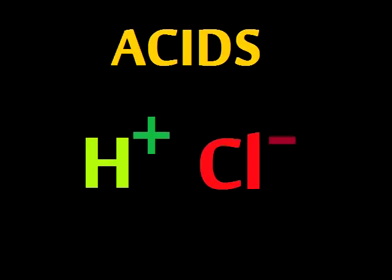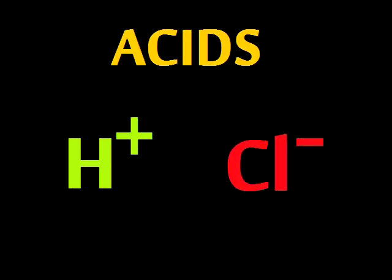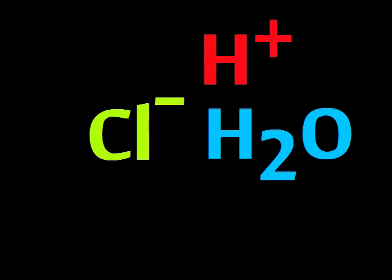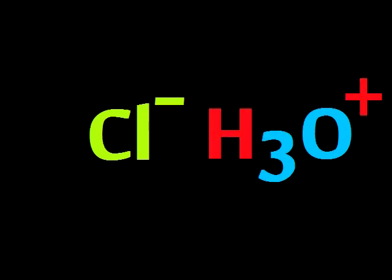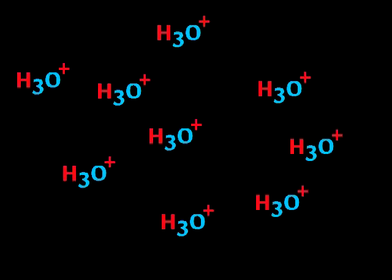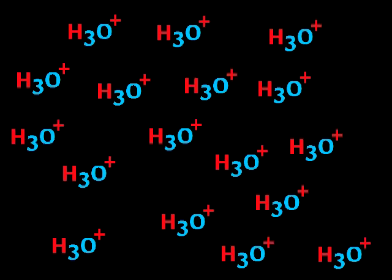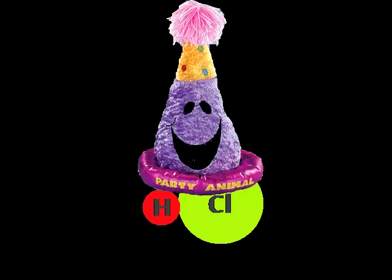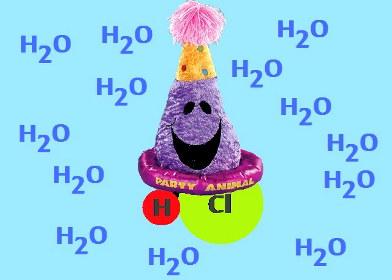Acids give off H+, when in water they are stirred, forming H3O+, hydronium's the word. The more hydronium's there are, the lower pH gets — all because the silly acid had to go get wet.